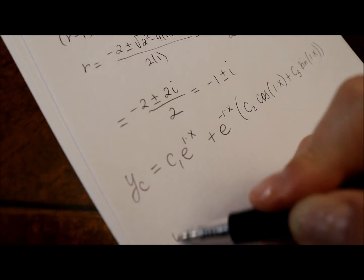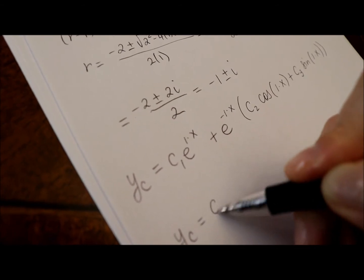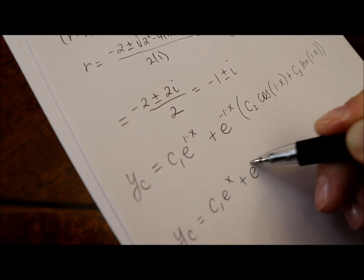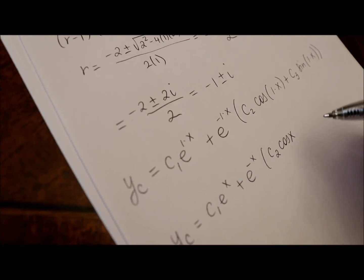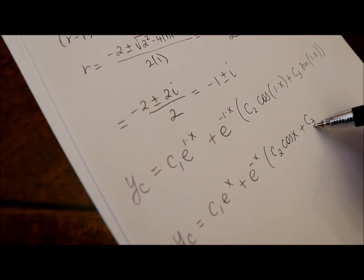Or in other words, complementary function is c sub 1, e to the x, plus e to the negative x, c sub 2, cosine x, plus c sub 3, sine x.